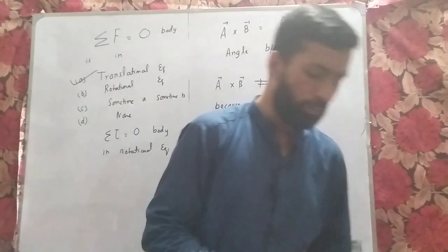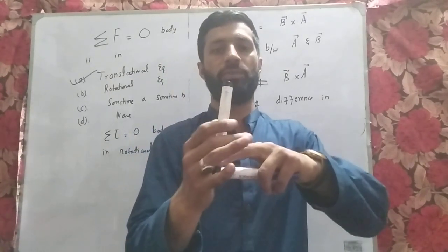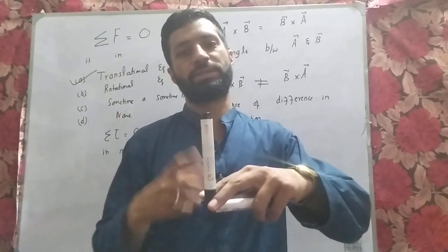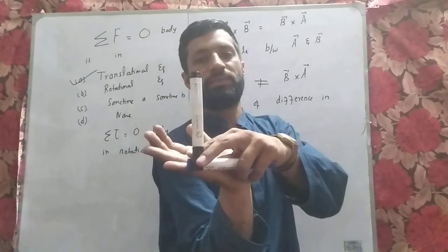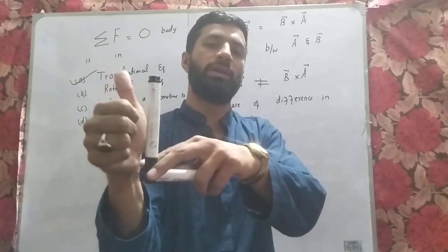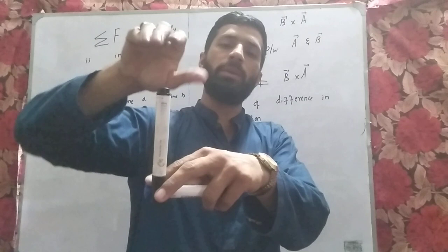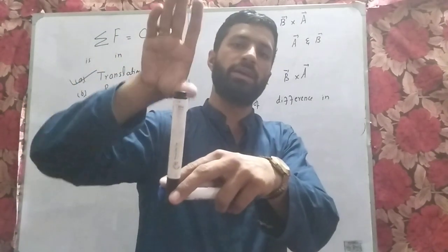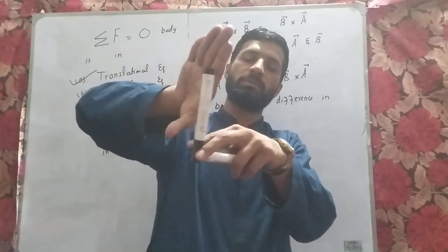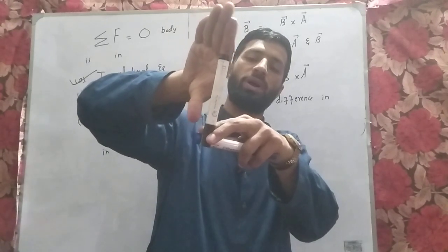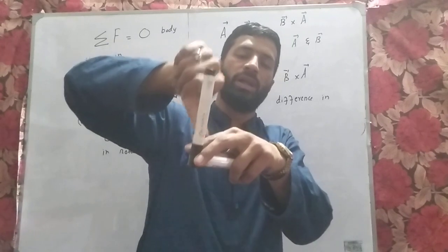Using two vectors as an example: for A × B, place fingers along vector A and curl toward B — the thumb points upward. For B × A, place fingers along B and curl toward A — the thumb points downward. This confirms that A × B and B × A have opposite directions, demonstrating the anticommutative property of the cross product.